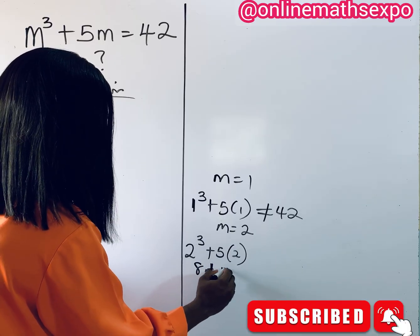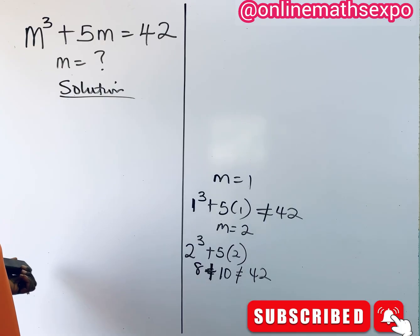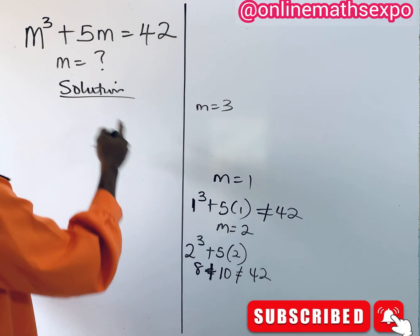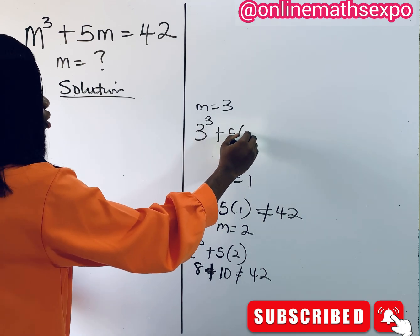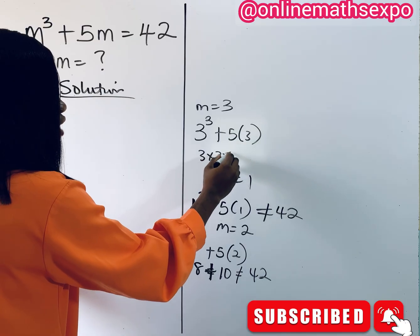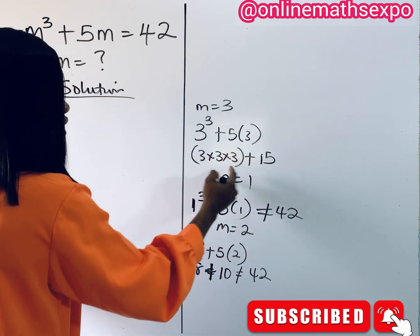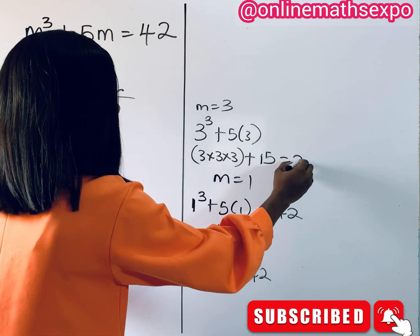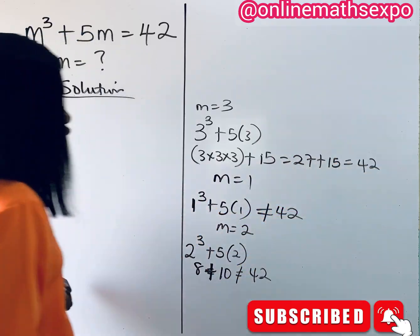Now let's try m equal to 3. We have 3³ plus 5 times 3. 3 cubed is 3 multiplied 3 times, which gives 27, plus 5 times 3 is 15. When you add 27 and 15 it gives you 42. So m equals 3 works.